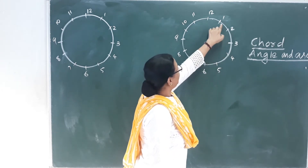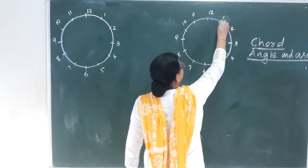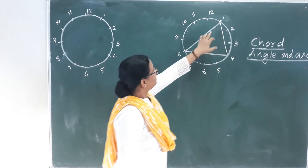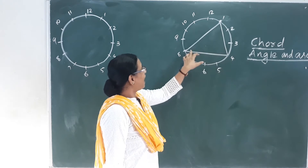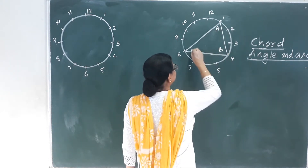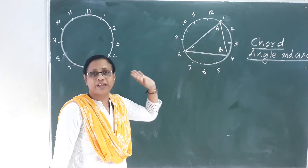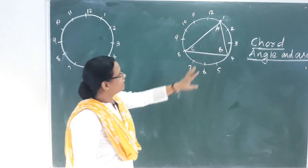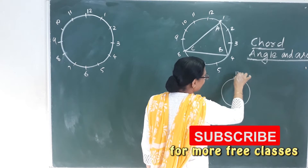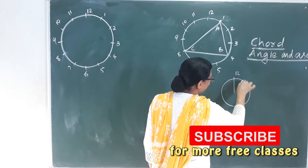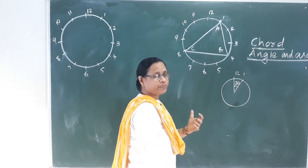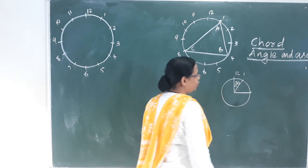On a clock, let's join 1, 4, and 8. We need to find the angles A, B, and C. Two consecutive numbers on a clock face are separated by 30 degrees.